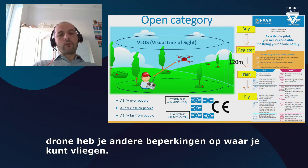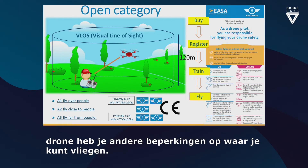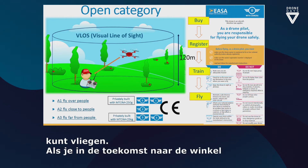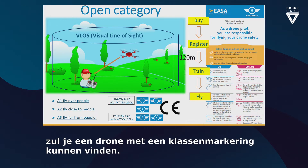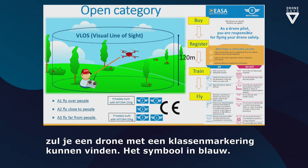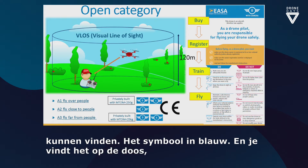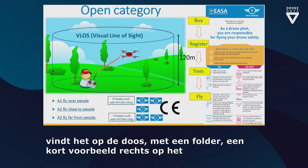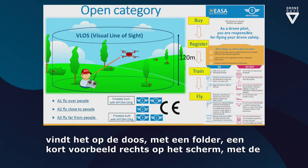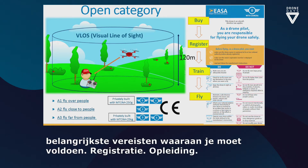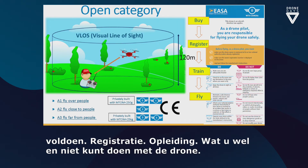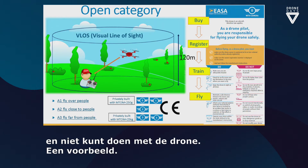When you go to the shop in the future, you will be able to find a drone with a class mark — class marks from C0 to C4, shown with the symbol in blue on the slide. Together with the class mark in the box, you will find a leaflet listing the most important requirements you need to follow: registration, training, and what you can and cannot do with this drone.